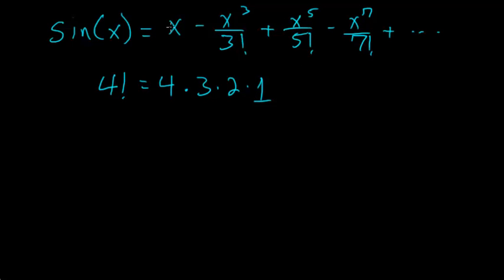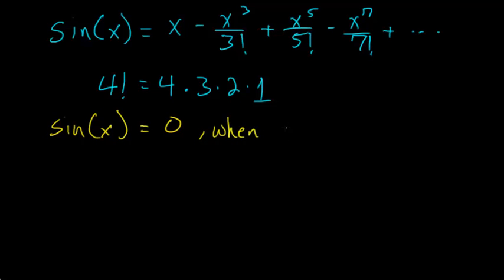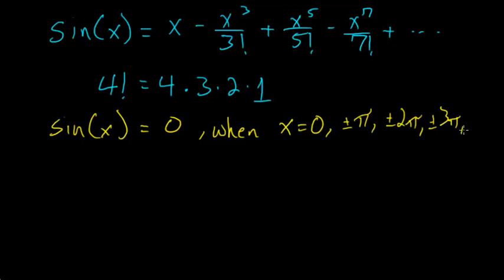It's important to see this as an infinitely long polynomial because we can rewrite this function in terms of its roots — that is, the values of x that make the function equal to 0. The sine function equals 0 when x is 0, ±π, ±2π, ±3π, and so on. There are an infinite number of such values.